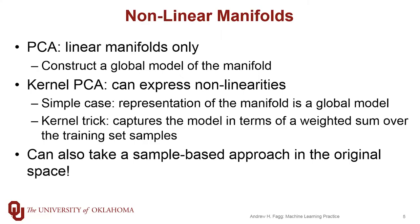So you've already learned about PCA and kernel PCA. PCA, as you know, only addresses linear manifolds, and in doing so we construct a global model of the manifold. So we explicitly represent that linear surface that the manifold lives on. With kernel PCA, we can express nonlinearities, and there are really two different types of cases here, and these are the same cases that we saw when we were looking at regression and kernel regression.